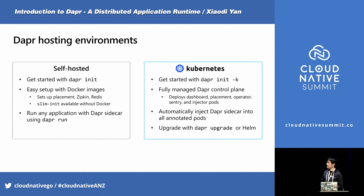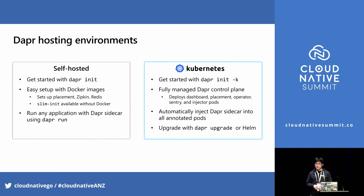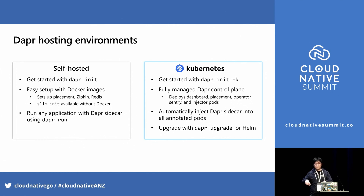How do we host Dapr? Dapr supports two environments. For local development, use self-hosted mode — Dapr runs in a separate process with your microservice, and you can use Docker Compose to enable the Dapr sidecar. Dapr also supports Kubernetes for production environments. In Kubernetes, the Dapr sidecar runs alongside your service in the same pod. In Kubernetes a pod can have multiple containers, so one service and one Dapr sidecar share the same pod.